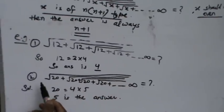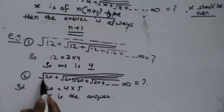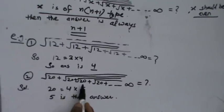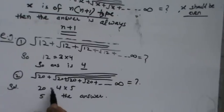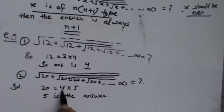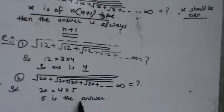For another example, if you are given a question like square root of 20 plus square root of 20 plus square root of 20 up to infinity, then 20 equals 4 into 5. The maximum term is 5, so the answer is 5.